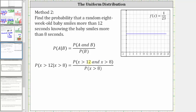Let's focus on the numerator first. The probability that x is greater than 12 and x is greater than 8 is just equal to the probability that x is greater than 12. This gives us the probability that x is greater than 12 divided by the probability that x is greater than 8.